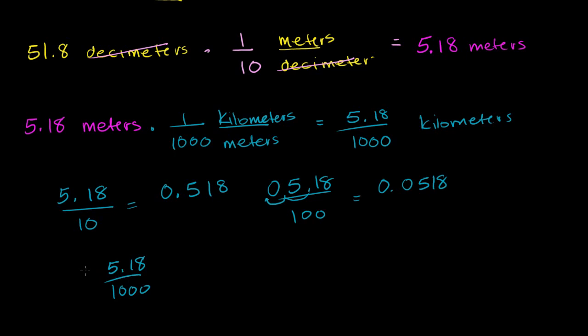And if we take 5.18 and we divide by 1,000, we're going to move the decimal 3 to the left. So let's do it. So if we start with 518, the decimal started here. We're going to go 1, 2, so it's 1, 0, and then 3. And that's where the decimal is going to sit. So this is 0.00518.